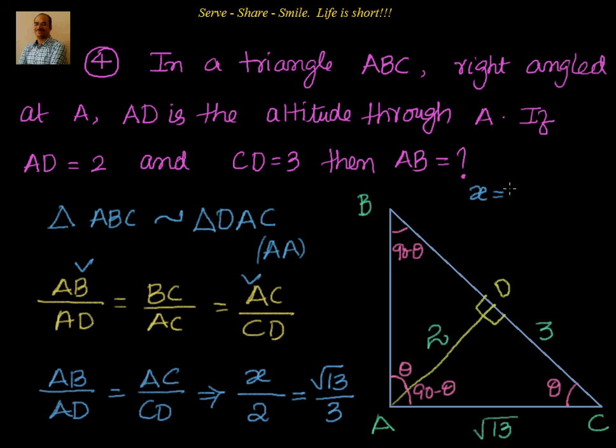If you cross multiply, you get X equals 2 by 3 times root 13, or you can also say that's equal to root of 52 divided by 3.